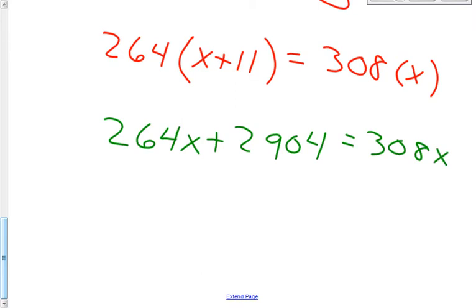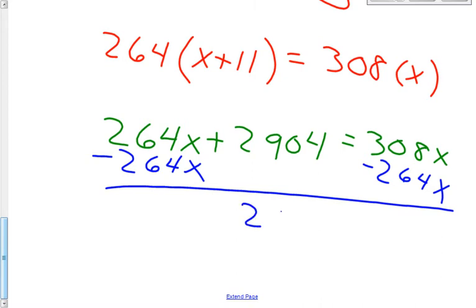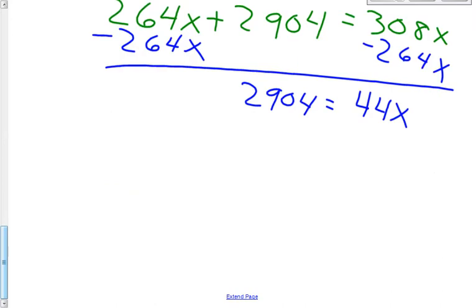Let's get all our x's onto the right side. So let's subtract 264x. And we get 2904, that equals 44x.